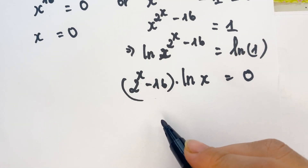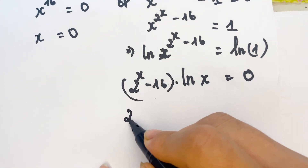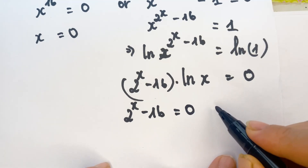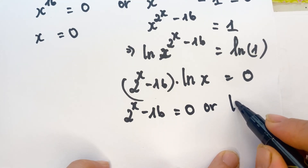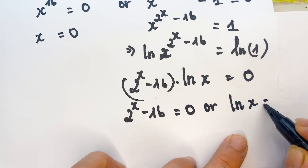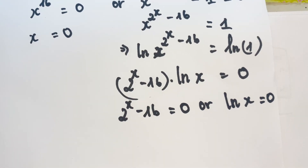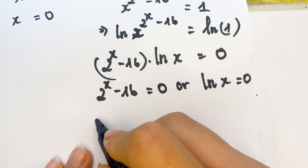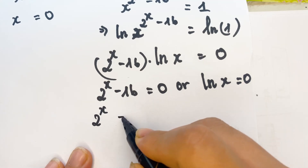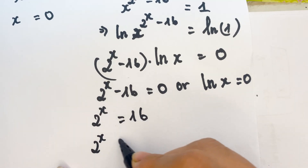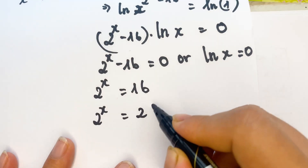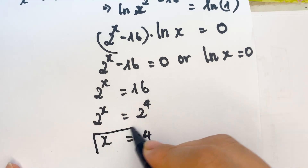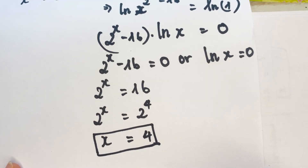We can say 2^x - 16 equals 0, or the natural log of x equals 0. Looking at the first equation, 2^x equals 16, which is 2^4, so x equals 4.